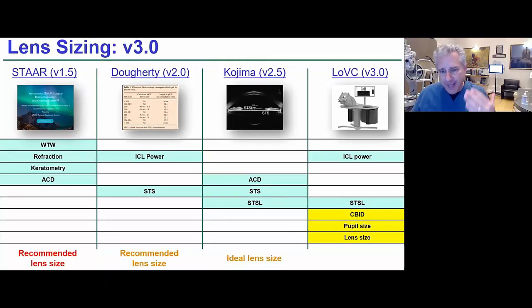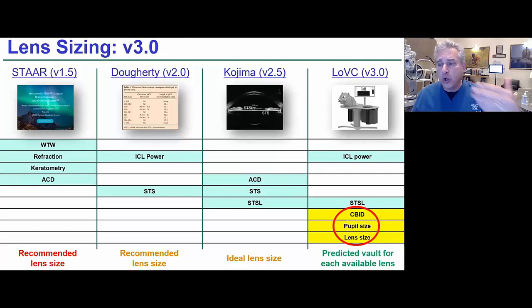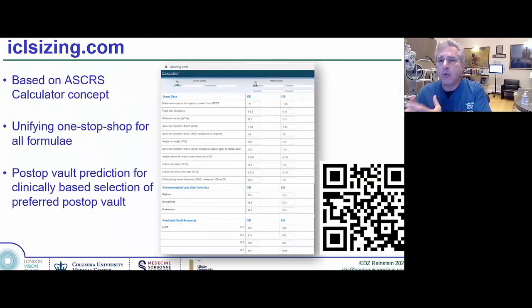Rather than recommending a lens size, what we did was we said, forget about that. Let's use these parameters, and let's give what the vault would be for each of the four available sizes. You might want to select a higher or a lower vault depending on the eye. We programmed everyone's equations. This is Nakamura 2 and Doherty, the Kojima, and our own equation. It's like the ASCRS website, free of charge to use.